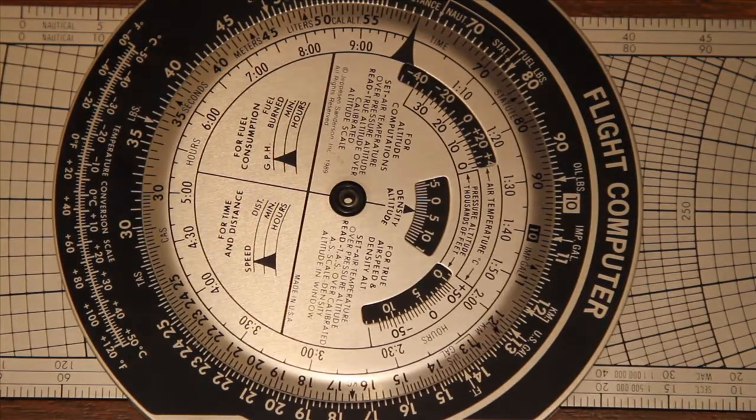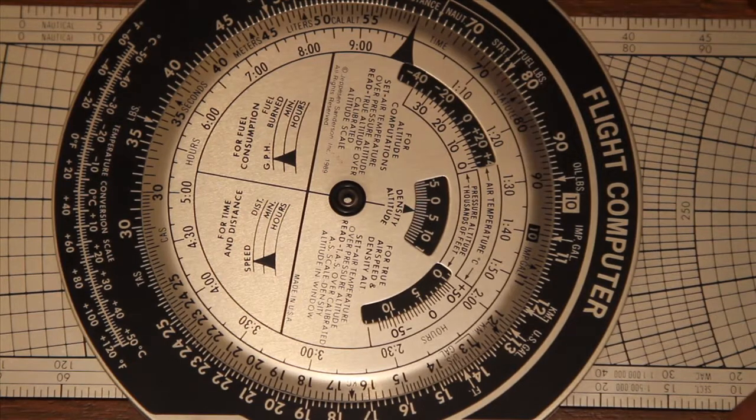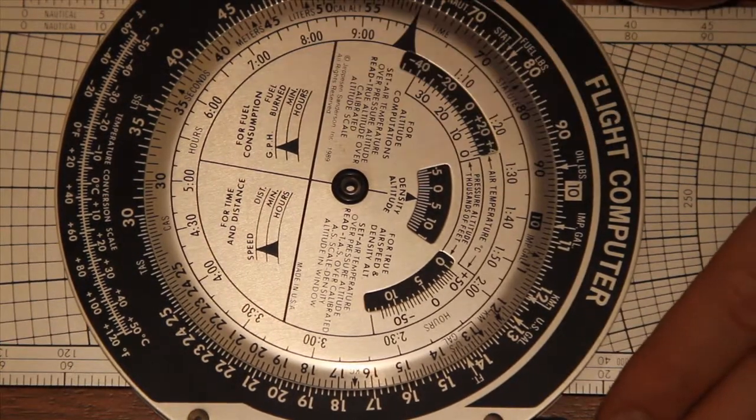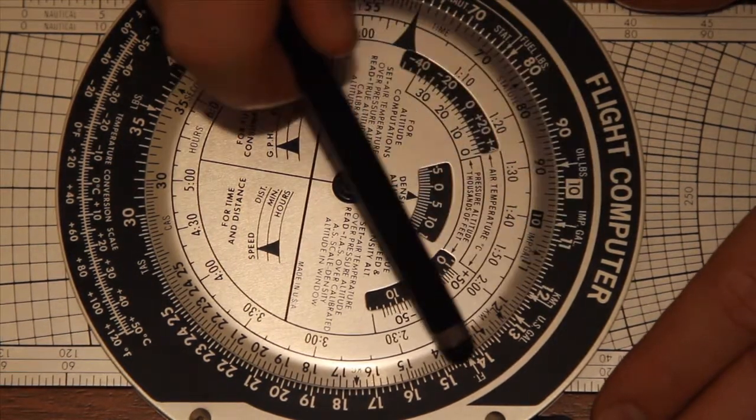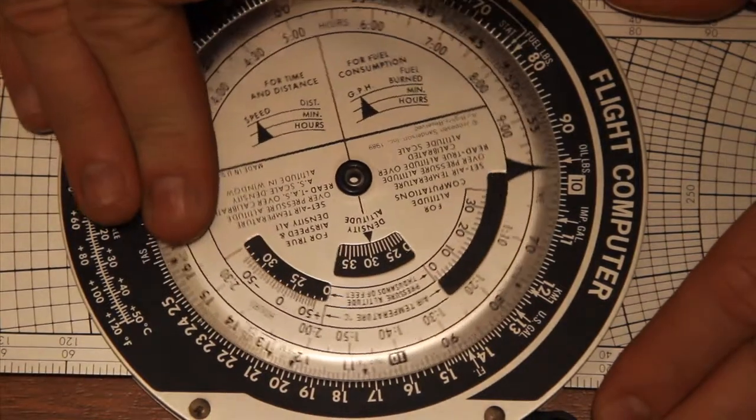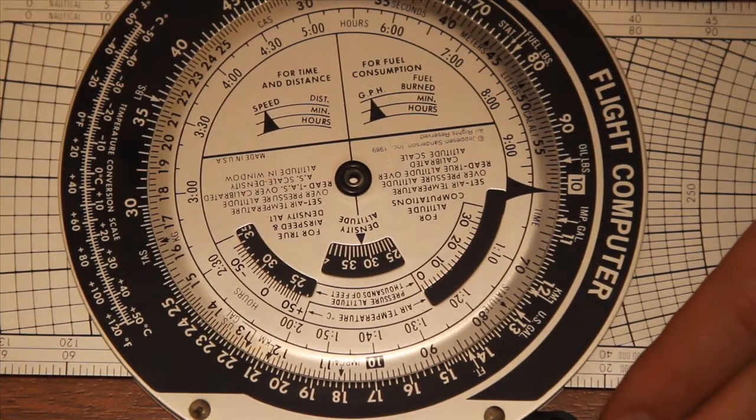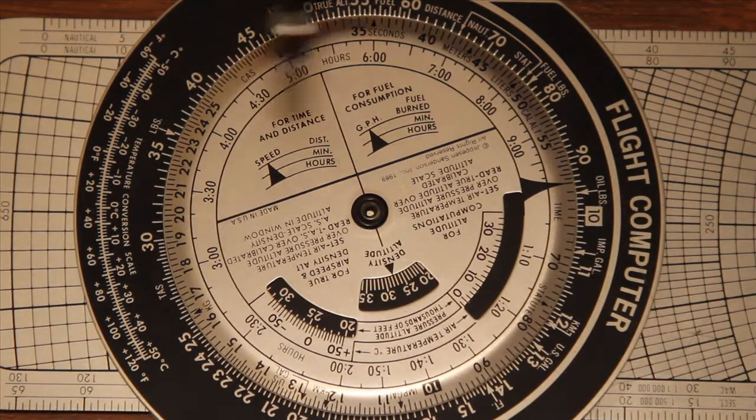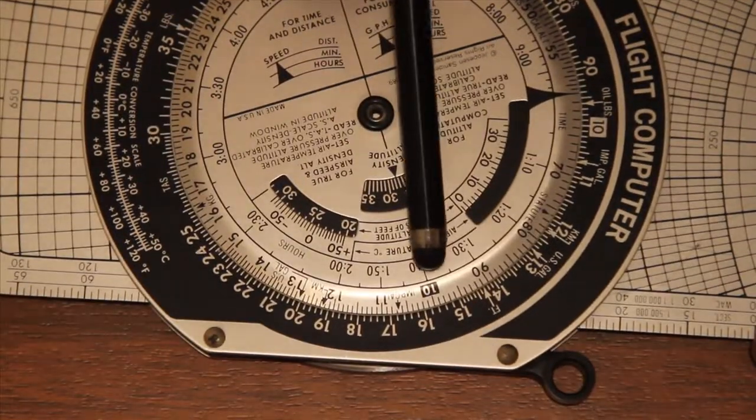To do multiplication, you need to utilize the 10 on the inner wheel. What you do is move that 10 to line up with one of the numbers that you wish to multiply.